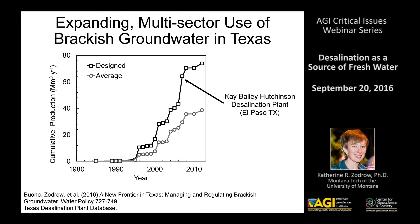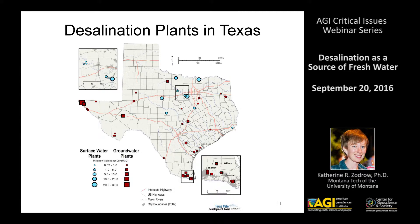Especially over the last 30 years, cumulative production designed and average for all desalination plants — all of the groundwater desal plants in Texas — has grown. These include some relatively large plants, the biggest being the Kay Bailey Hutchison desalination plant in El Paso, which produces about 15 million gallons of water per day. That plant is located in the westernmost part of the state, where it is very dry and arid.